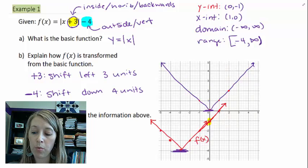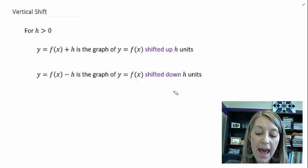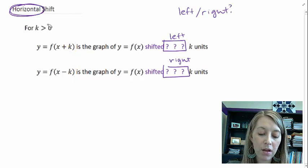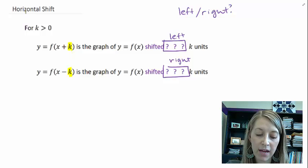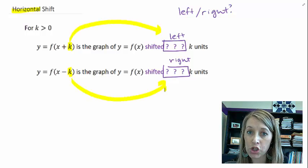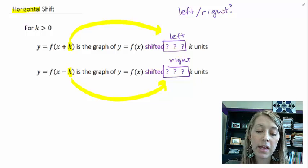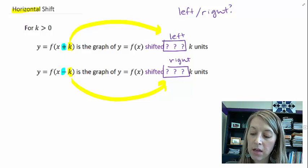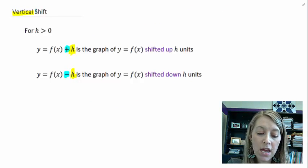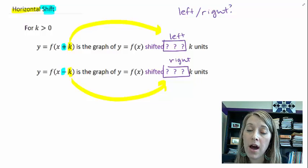Let me recap what we know so far. Anything that happens on the outside of f(x) affects it vertically, and anything on the inside affects it horizontally — in a backwards fashion. Also, since this transformation only involved adding and subtracting, that operation gives the shift transformation. In the next video, we'll learn how a different operation affects the graph in a different way.